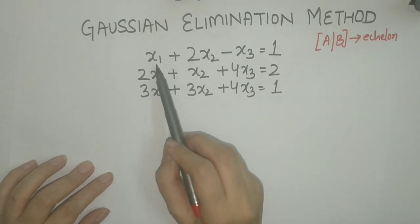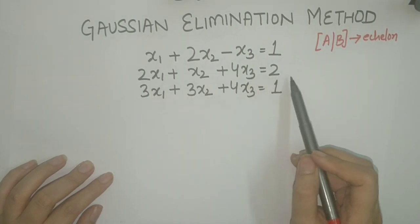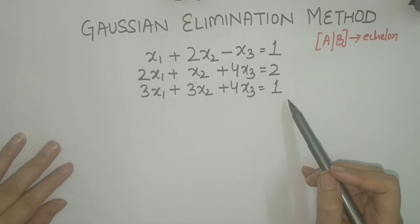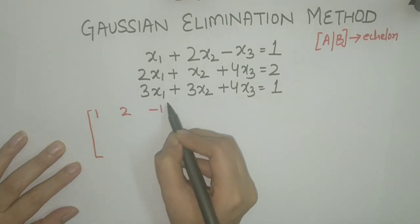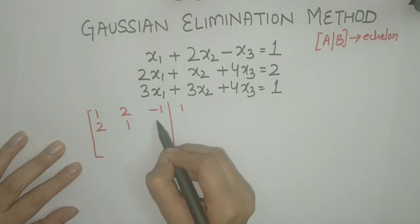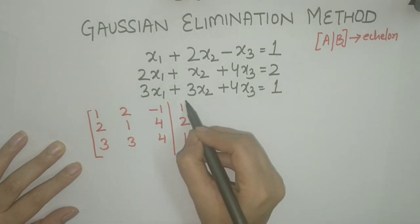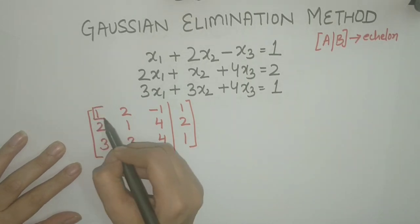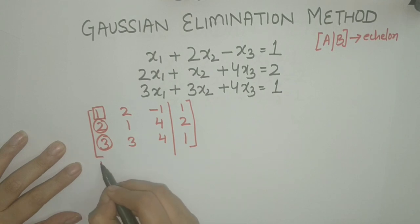Consider the system: x1 + x2 − x3 = 1, 2x1 + x2 + 4x3 = 2, 3x1 + 3x2 + 4x3 = 1. The corresponding augmented matrix for this system is [1, 1, −1 | 1; 2, 1, 4 | 2; 3, 3, 4 | 1]. In order to reduce it to echelon form, we need to make all the entries below the leading entries zero. The first leading entry is 1; we need to make the entries below it zero.